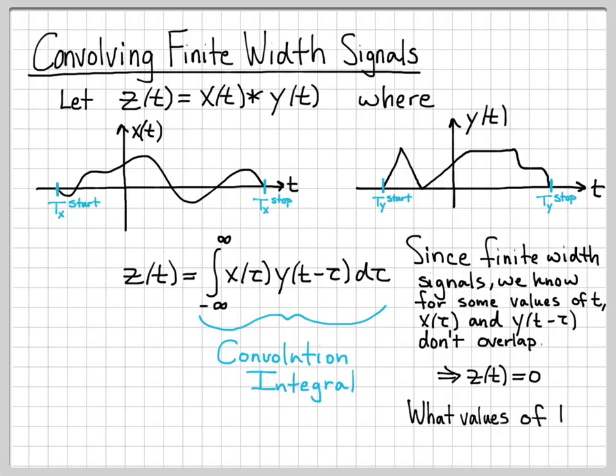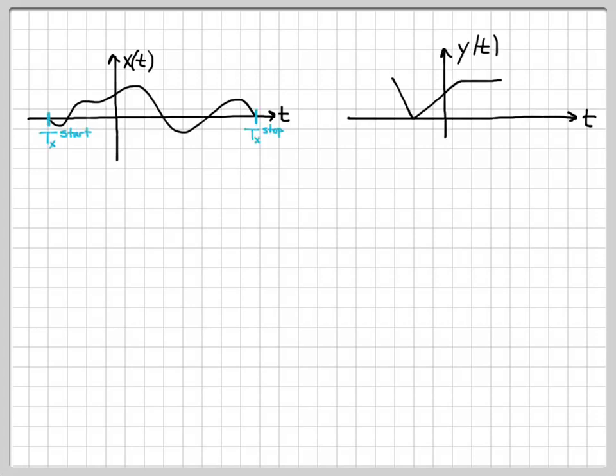The question that we want to answer a little bit more clearly is, for what values of t specifically does this happen? So we're going to come up with a very simple rule that tells us how to figure that out. So here are the two finite width signals that we're dealing with again. Let's just redraw those, their start and stop time locations.